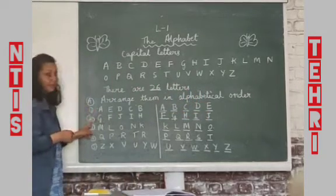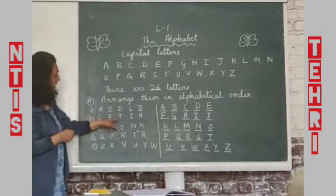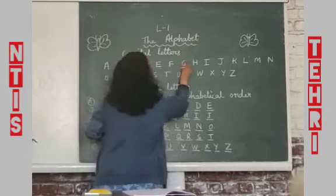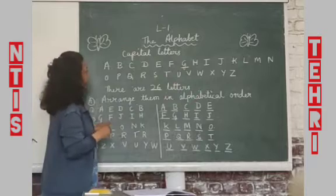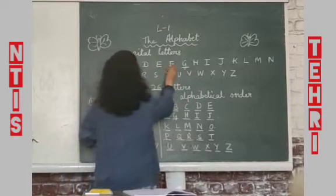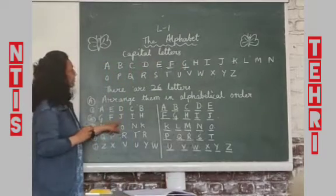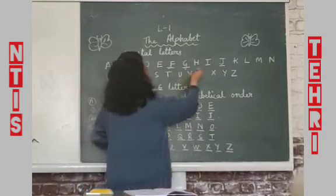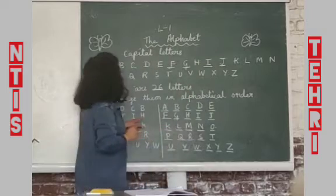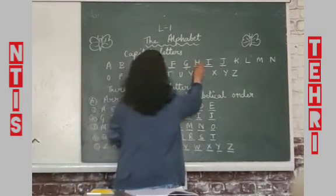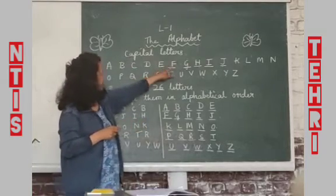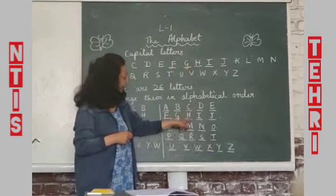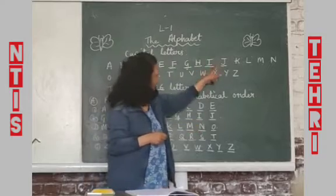Now the second one: G, F, J, I, H. F is here — it's before G. J is after G. I is before J. And H is before I. So the correct order is: F, G, H, I, J. I hope you are understanding. If not, please watch this video three or four times.